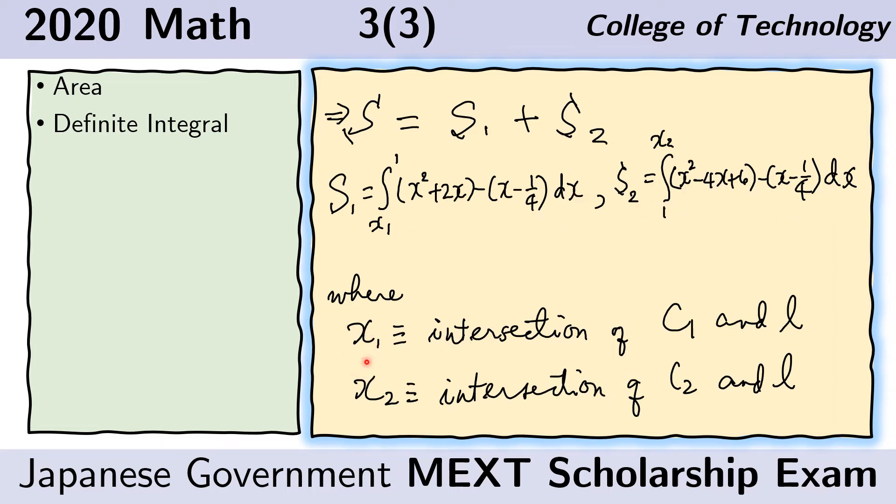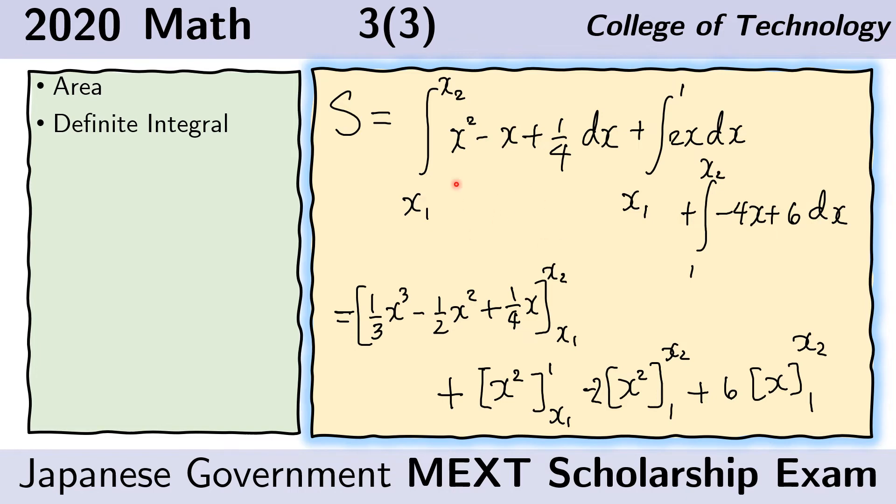Again, x sub 1 is the intersection of C1 and L and x sub 2 is the intersection of C2 and L. Here we just manipulate the integral to make it easier for us to solve. We notice that S1 and S2 both has x squared minus x plus 1 fourth. And so we group them together and we get the integral from x1 to x2.